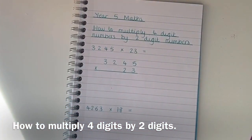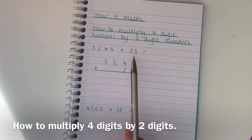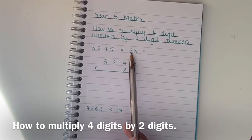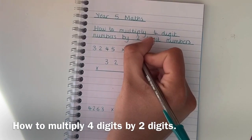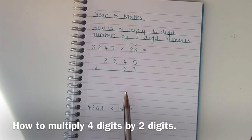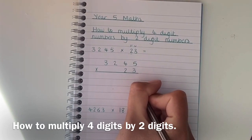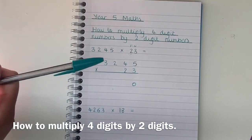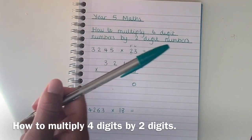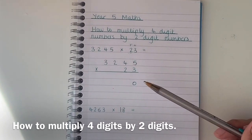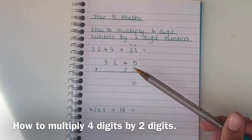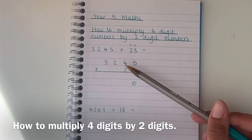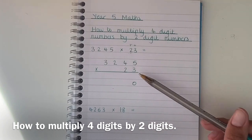Now because I'm multiplying by 23 and we've got the 20 in the tens column, I need to make sure I put my zero down first. That is going to be my placeholder for when I am multiplying by the 20. So before we do that we're going to start with 3245 multiplied by 3.